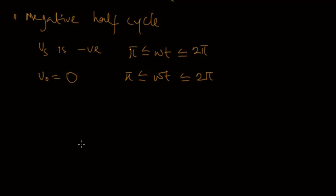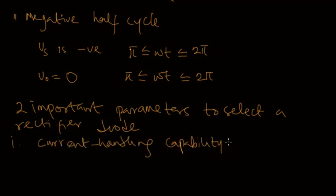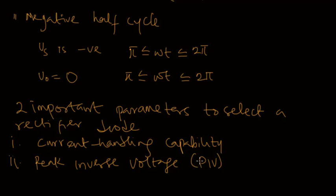There are two important parameters that must be specified when selecting a diode for rectifier design. The first is the current handling capability of the diode — that is, the largest current that the diode is expected to conduct. If you use a diode that cannot withstand the current passing through it, then that diode cannot function properly as a rectifier diode. So you must consider the current handling capability when selecting the diode for the rectifier.